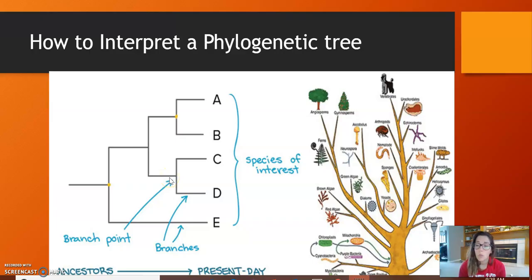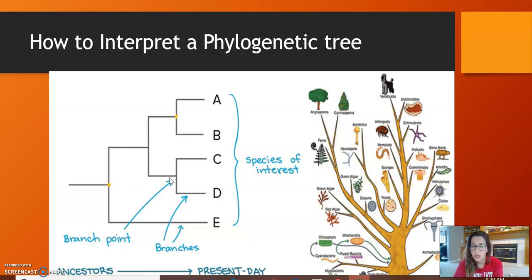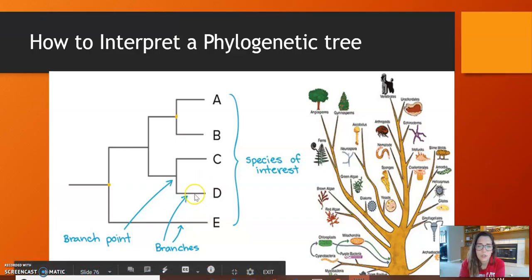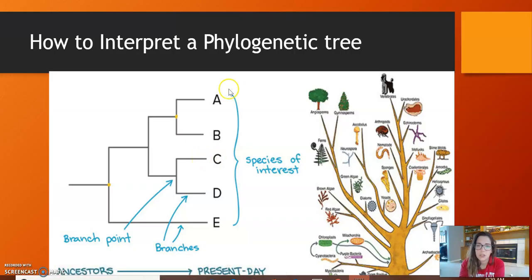A speciation event means that one ancestral species split into two different species. Later in this unit we'll talk about why organisms split — the different speciation events that could cause the split in the tree. These connecting lines are referred to as the branches. The common ancestor for species A, B, C, D, and E is shown here; the further to the left on the phylogenetic tree, the further back in history.